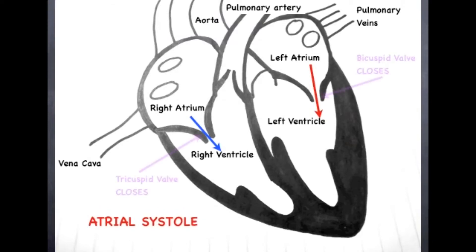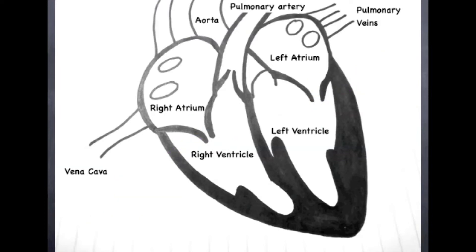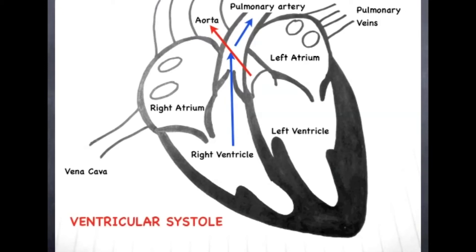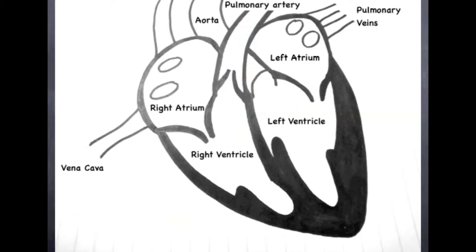After atrial systole, both the tricuspid and bicuspid valves close to prevent the backflow of blood back into the atria. After ventricular systole, the semilunar valves close to prevent the backflow of blood back into the ventricles.